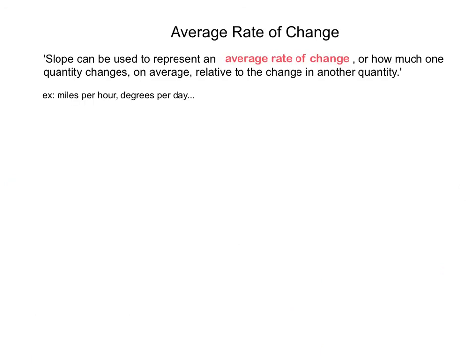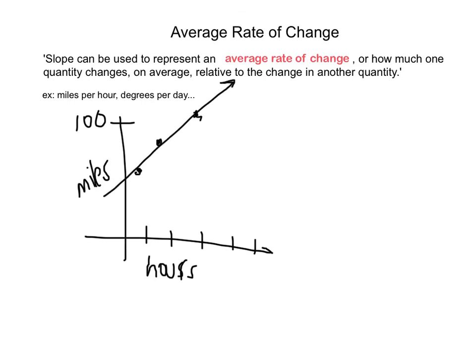Finally, slopes can be used for average rates of change. So, as the book defines, slope can be used to represent an average rate of change, or how much one quantity changes on average relative to the change in another quantity. So, you might have a graph that looks something like this, where you have, on one axis, hours, and on the other axis, miles. And so, if you're graphing this, and you say, for the first hour, you went 50 miles, the second hour, you went 75 miles, the third hour, you went 100 miles, you could connect these and have a line, and then figure out the slope to know how many miles per hour. Similarly, you can use this for degrees per day. And this is finally just a way to wrap up the chapter and to move into how it can relate to everyday life.